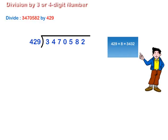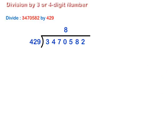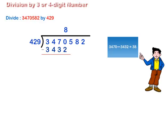429 multiplied by 8 is equal to 3432. 429 multiplied by 9 is equal to 3861. 3432 is less than 3470. And 3861 is greater than 3470. Therefore, 429 is contained in 347 eight times. We write 8 in the quotient above 0 and subtract 3432 from 3470. 3470 minus 3432 is equal to 38. So, the remainder is 38.